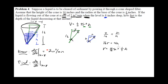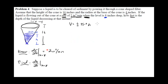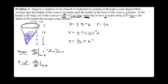Now I have r in terms of h, so I substitute r = (1/4)h into the volume formula. V = (1/3)π·((1/4)h)²·h. A common mistake is to take the derivative right now — clean it up first. Squaring (1/4)h gives (1/16)h². Multiplying by (1/3) gives (1/48)π. Then h² times h is h³. So I now have a clean volume equation in one variable: V = (1/48)πh³.